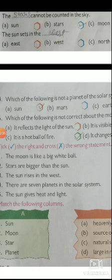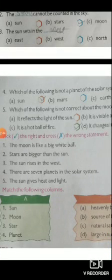Question 5: Which of the following is not correct about the moon? Answer: Option C, it is a hot ball of fire.